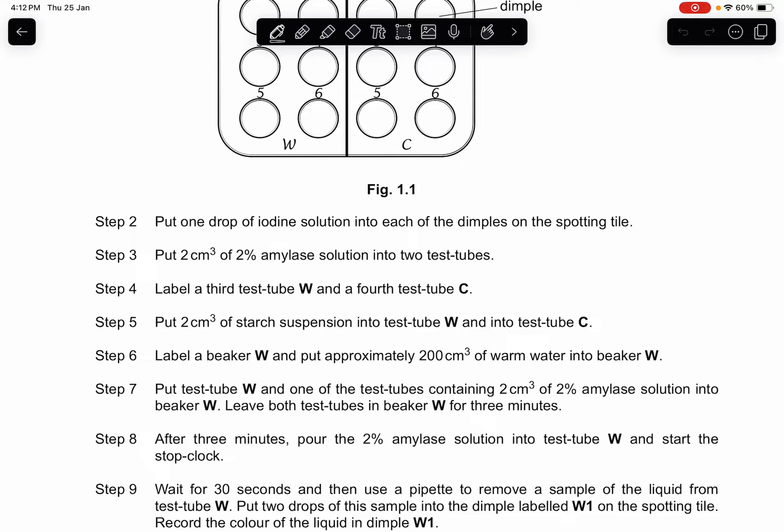Step 4, label a third test tube W and a fourth test tube C. Step 5, put 2 cm³ of starch suspension into test tube W and into test tube C. Step 6, label a beaker W and put approximately 200 cm³ of warm water into beaker W. Step 7, put test tube W and one of the test tubes containing 2 cm³ of 2% amylase solution into beaker W. Leave both test tubes in beaker W for 3 minutes.